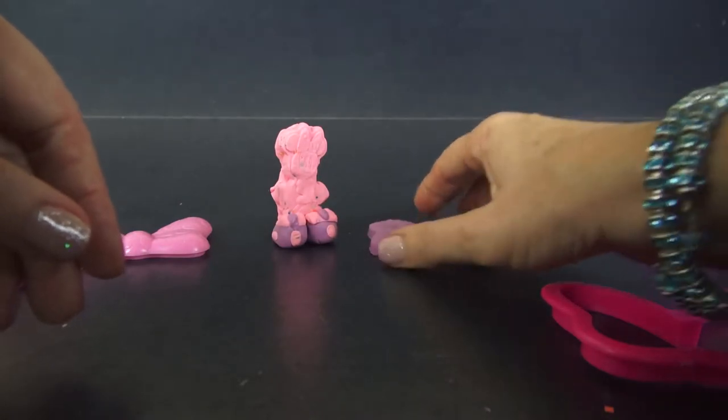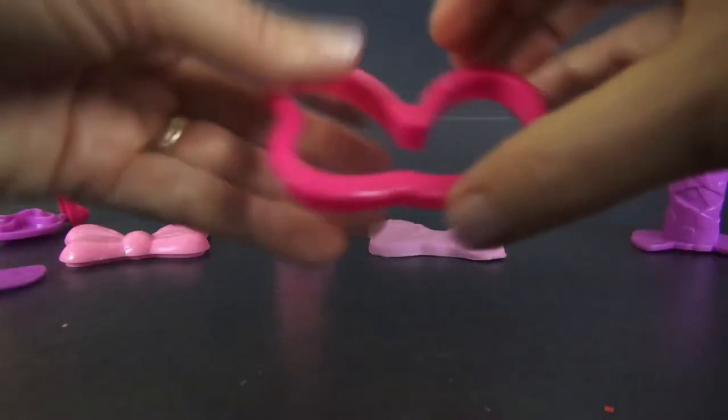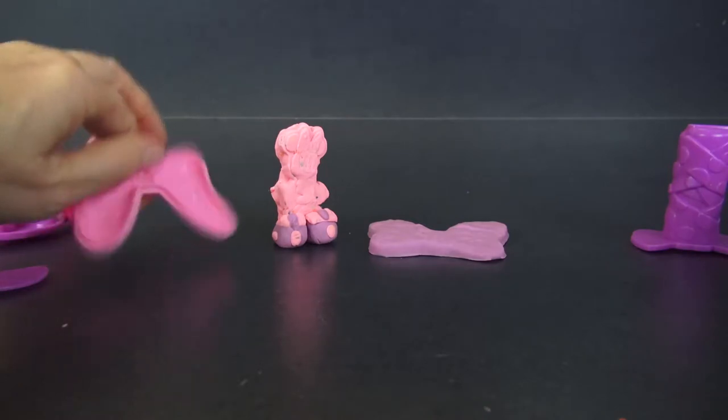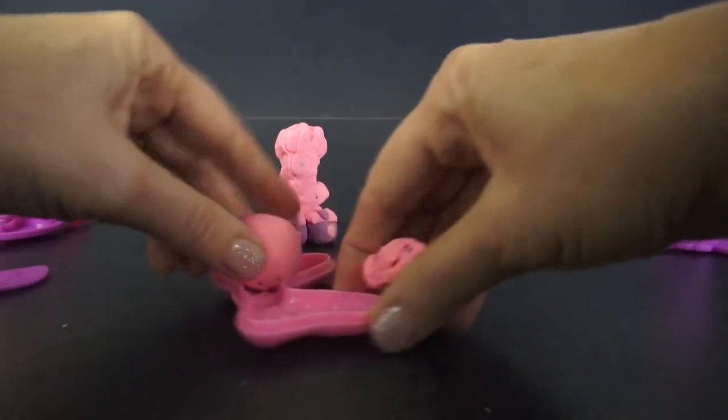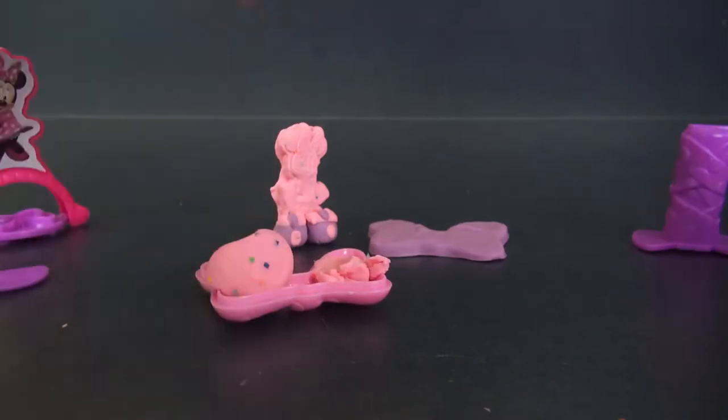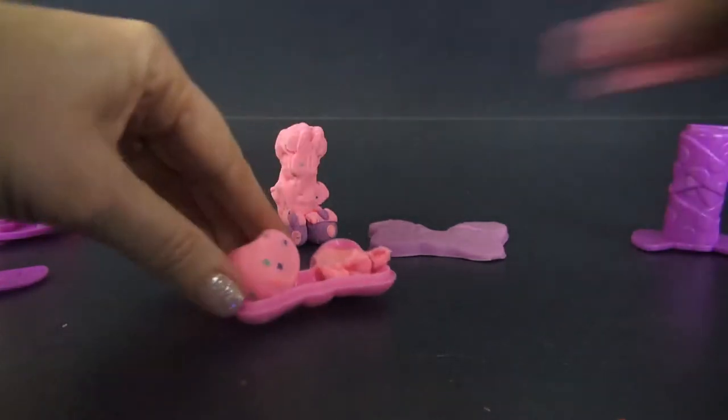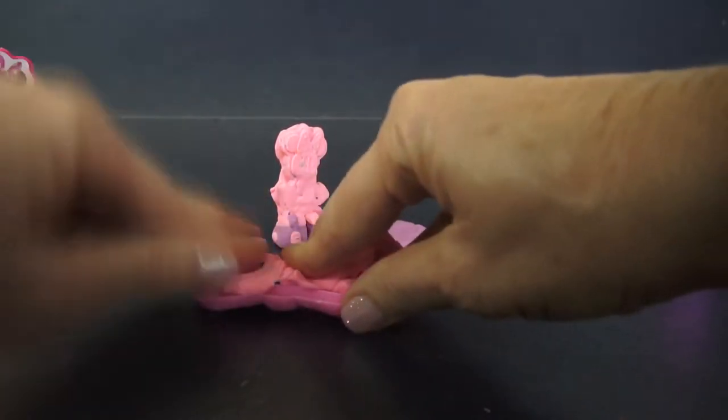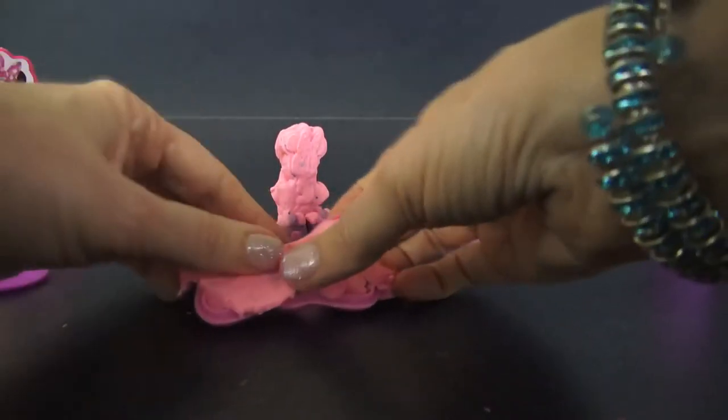So we're going to use another color, the pink, and we're going to fill up this mold with pink Play-Doh so that we can make the next layer.